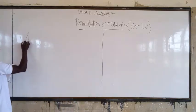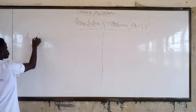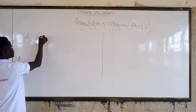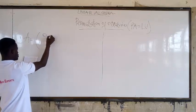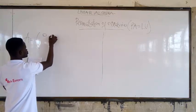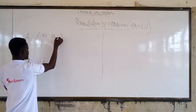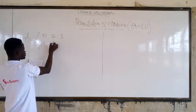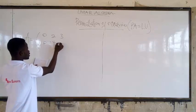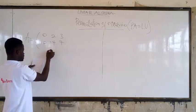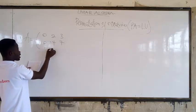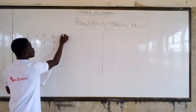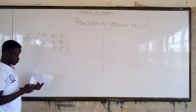Let's say we have a matrix A equal to: 0, 2, 3 / 2, -4, 7 / 1, -2, 5.